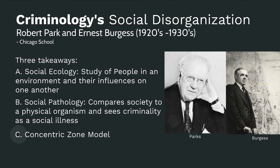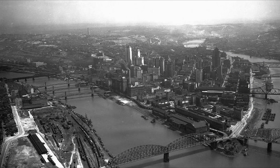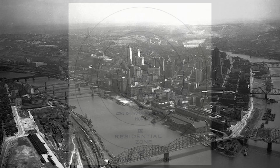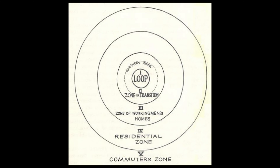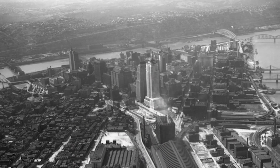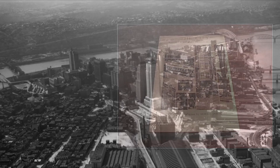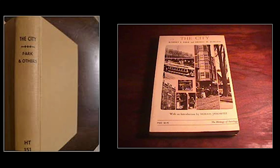The concentric zone model was created by Ernest Burgess in 1925. This Chicago school urban land use model was based off the 1925 metropolis. The model assumes that a city is laid out on an isotropic plain, or flat surface. It must be clear that this is not a model of all cities, but a model of the industrial city at its peak. The book called The City by Park, Burgess, and Mackenzie, 1925, contained this model and analyzed crime in the industrial city.